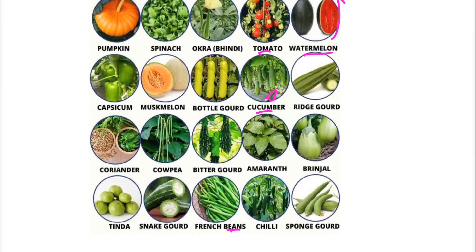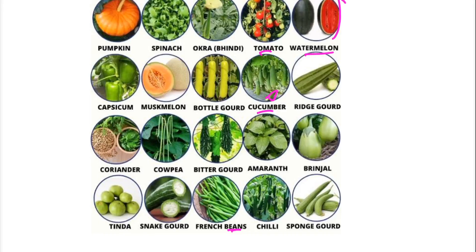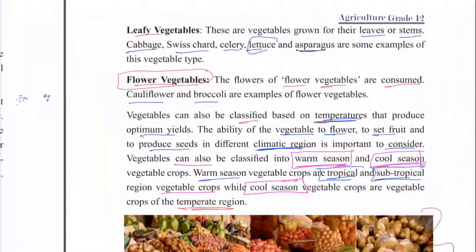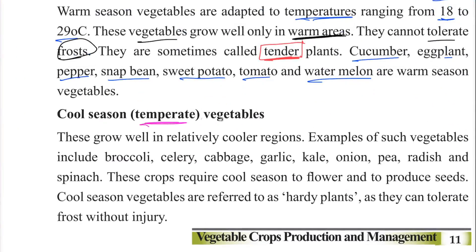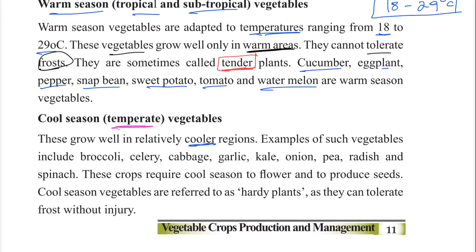Cool season or temperate vegetables grow well in relatively cooler regions. Examples include broccoli, celery, cabbage, garlic, kale, onion, pea, radish, and spinach.